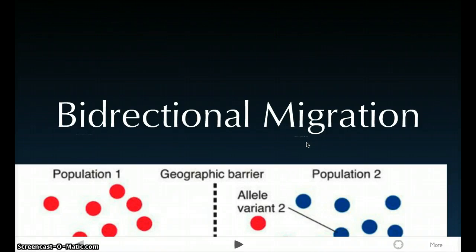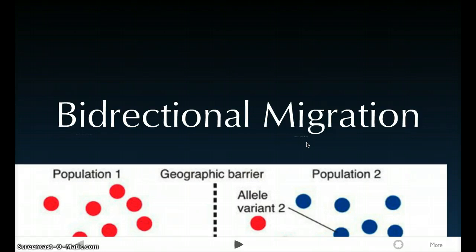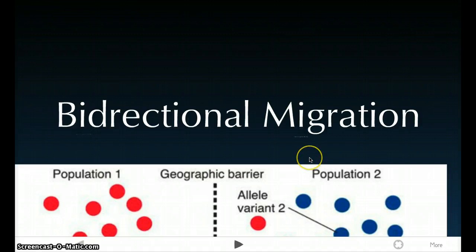I'm going to start off by talking about migration. Migration is basically when a small group of individuals moves to a new location and, in this case, breeds with the individuals there. And this migration and then breeding of different alleles creates — well, not completely new, but it does definitely change allele frequencies.